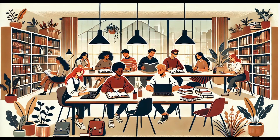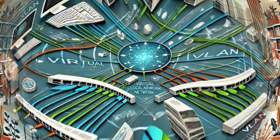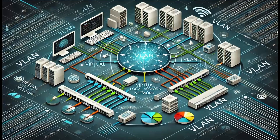In this lesson, we're going to take a closer look at virtual local area networks, known as VLANs. We create VLANs by configuring a physical Layer 2 switch into multiple virtual switches. These virtual switches each form their own broadcast domain. Let's look at how this works.